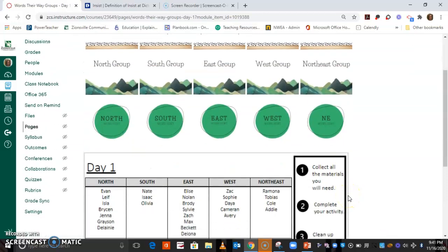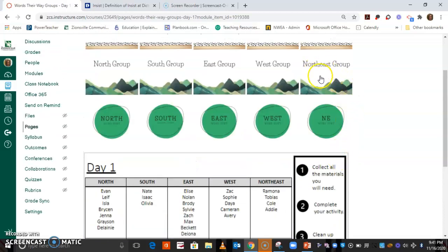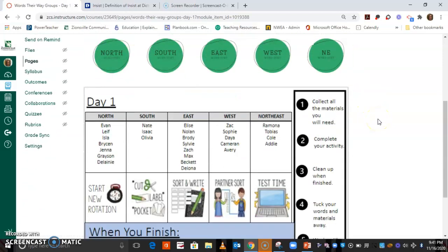So now it's time for Words Their Way. If you are in the northeast group, you are going to be clicking on your box up here to go straight to your test. And then the west group, you are going to be doing a partner sort, taking your words from your pocket and doing your sort. East group is going to be doing something a little different.